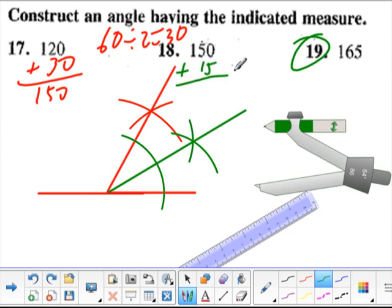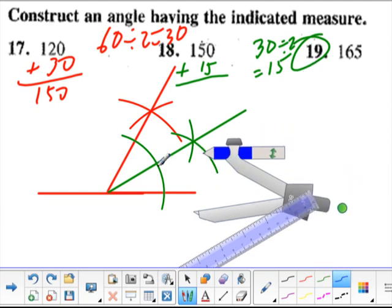Why is 15 important? Well, what's half of 30? Half of 30, 30 divided by 2 is 15. So I can bisect one of my 30 degree angles to make a 15 degree angle. So let's change colors again and bisect. I'm going to bisect this angle, so I'll have my 150 plus my 15, and then I'll have my 165.